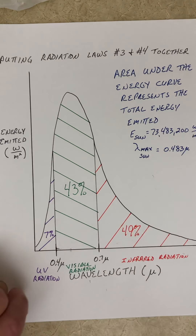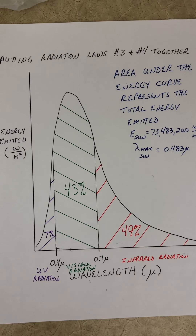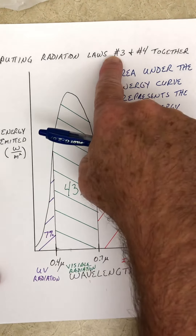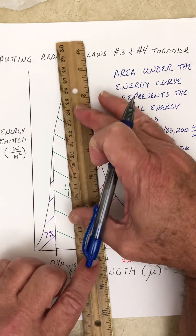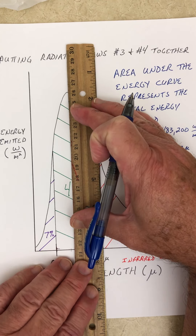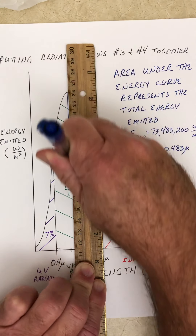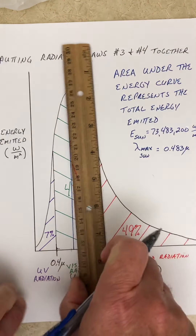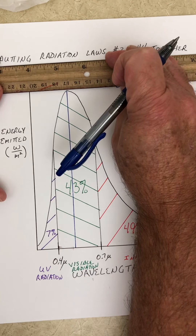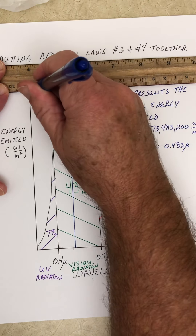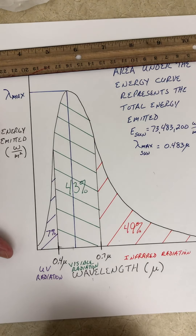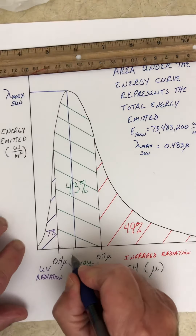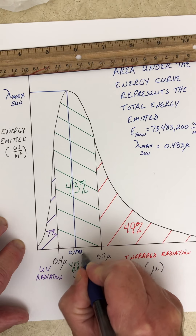There is one more concept I need to get across. Remember we're talking about law number three — Wien's displacement law. We said the wavelength of maximum emission for the Sun was 0.483 microns. What that represents is that there is one wavelength that the Sun emits more than any other wavelength. Right here on the curve is the wavelength of maximum emission for the Sun — lambda max — and that is 0.483 microns.